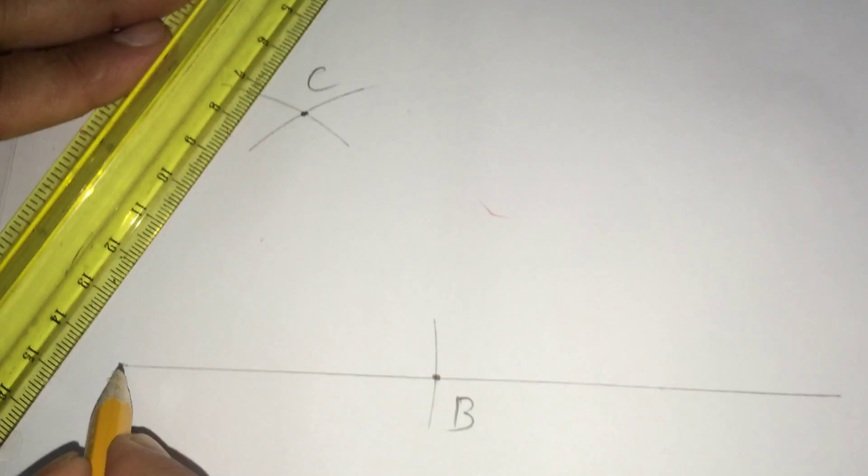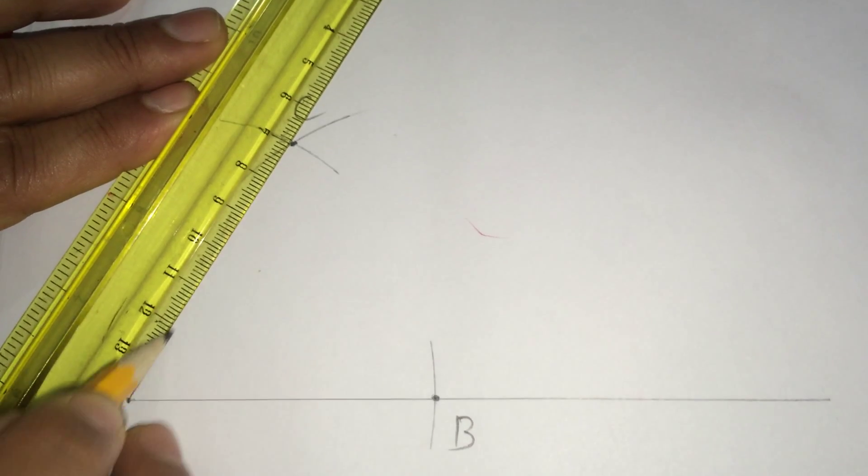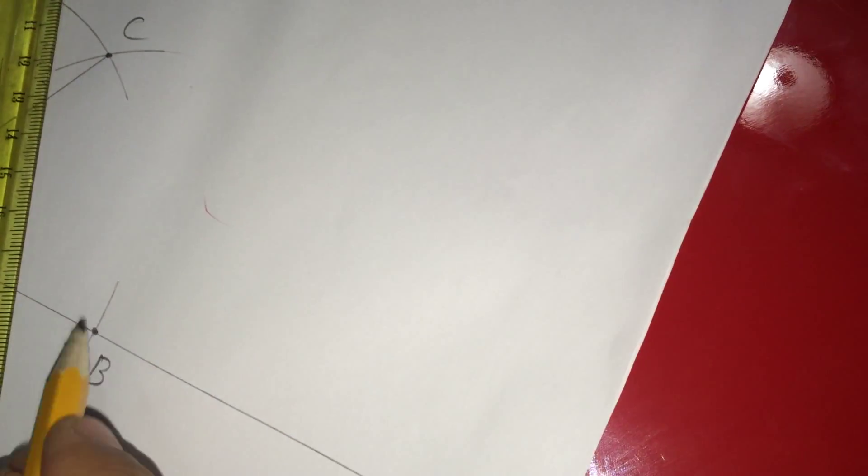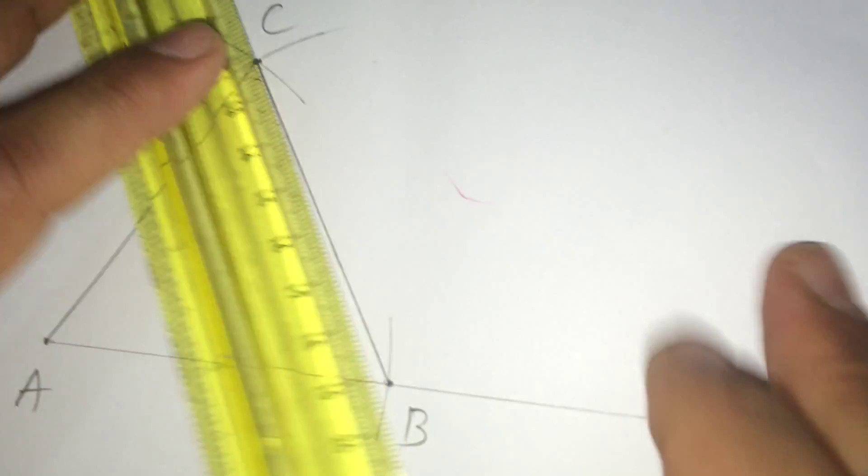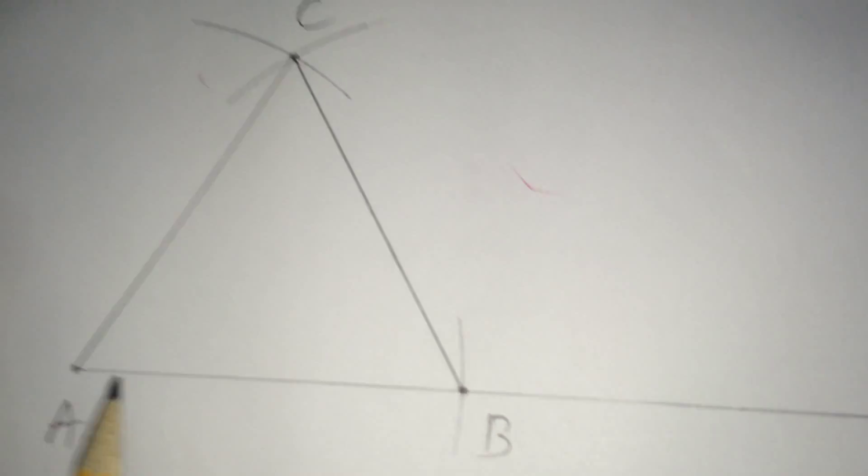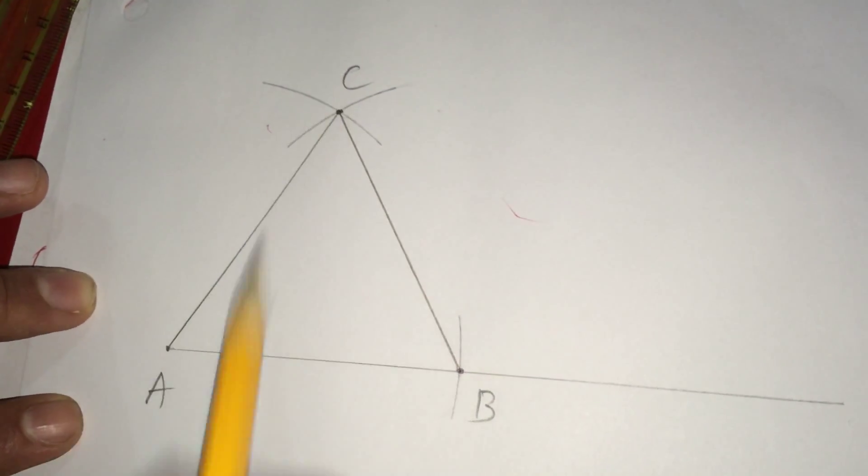Then, this intersects the previous arc at C and call this point C and then, I am rewriting this point as C.